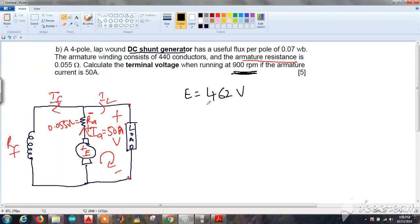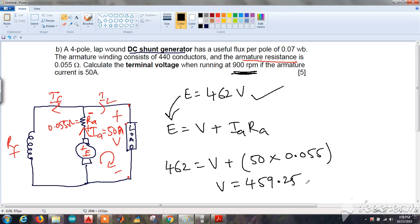The generated EMF E equals 462 volts. Now let me substitute the value of E in the equation we got earlier. The terminal voltage V equals 459.25 volts. This is our answer.